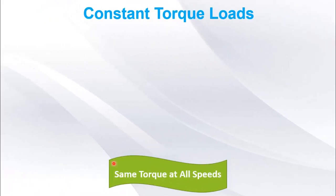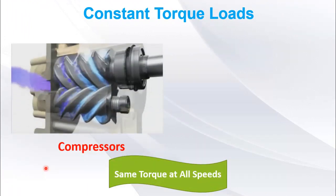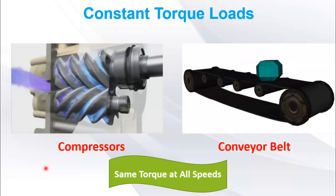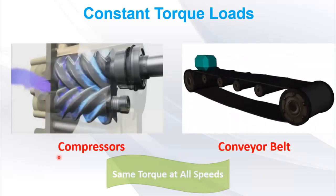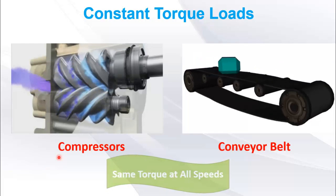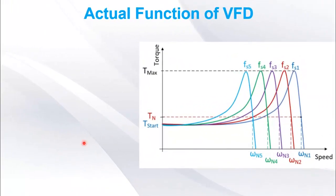Here, we have examples of constant torque loads. Compressors and conveyor belts are examples of constant torque loads. It means that the torque requirement of such type of loads is constant on all speeds. Let's see how induction motor can produce constant torque on different speeds. For this, we have to refer to torque speed characteristics of motor.